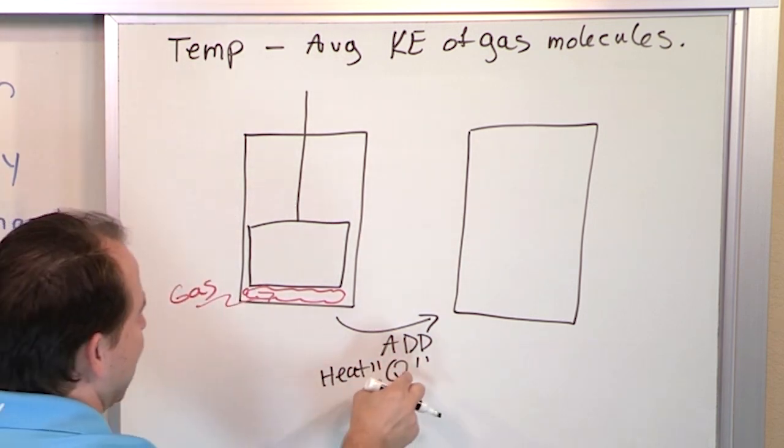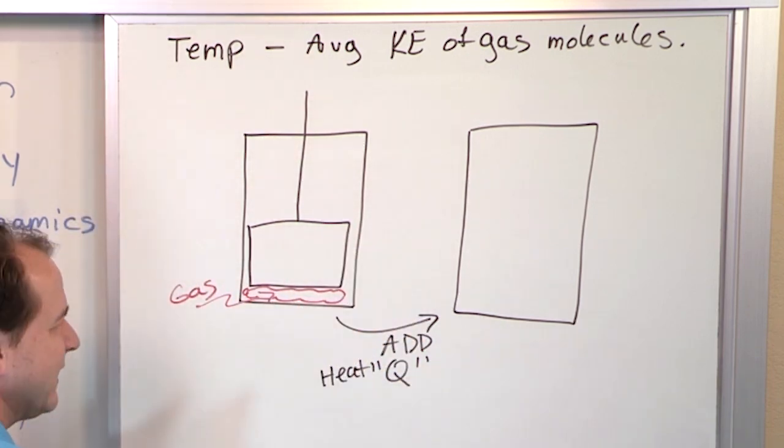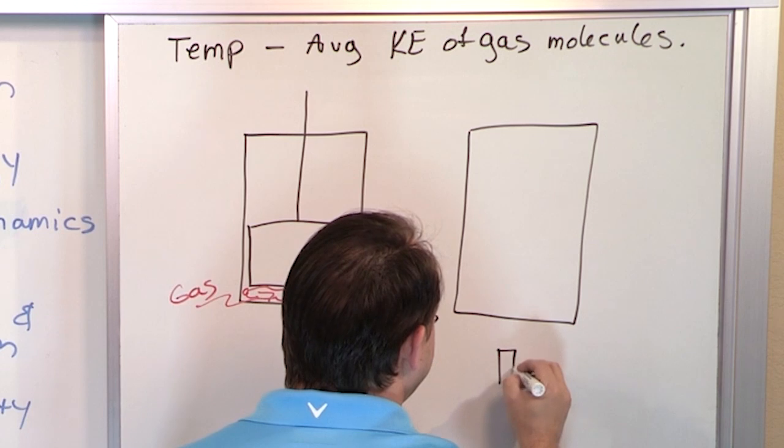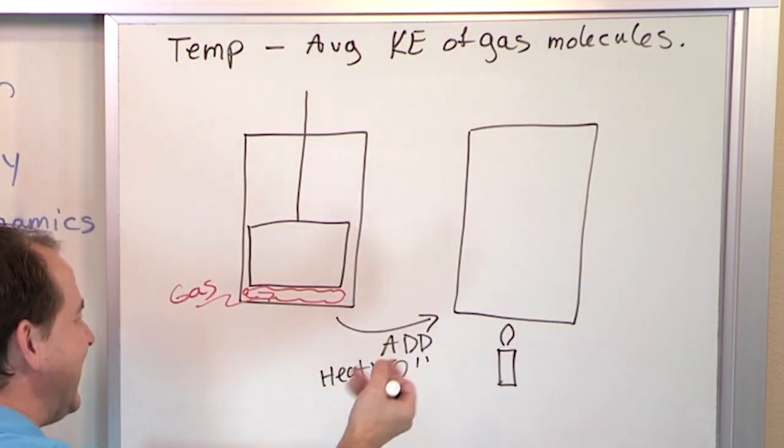But anyway, we call it Q, which means adding heat energy. What's going to happen? So you can kind of think of like a little candle being under here with like a little flame or something under it. It's heating it up. What's going to happen?